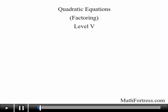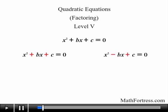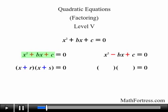In the previous video we started solving quadratic equations of the form x squared plus bx plus c equals 0. Recall that we went over two examples: one where both the coefficients b and c were positive, and one where b was negative and c was positive. In order to factor quadratic trinomials we had to find integer values for r and s to generate the linear factors of the quadratic equation. In the case where both the values of b and c were positive we had to find two positive factors of c that add up to b. In the case where b was negative and c was positive we had to find two negative factors of c that add up to negative b.